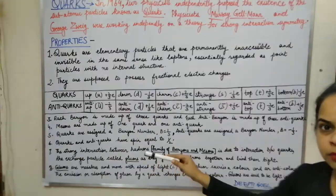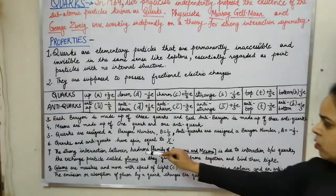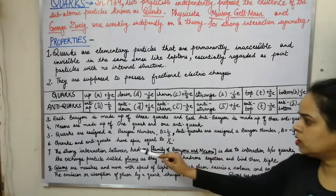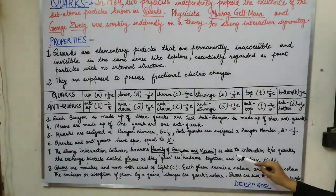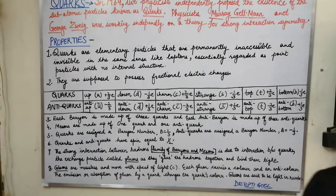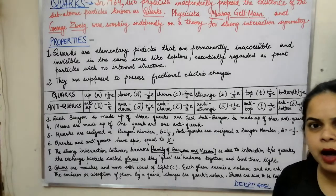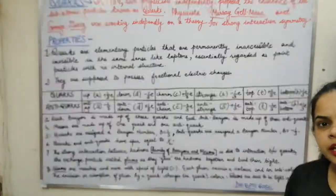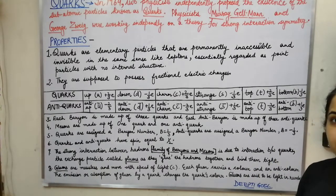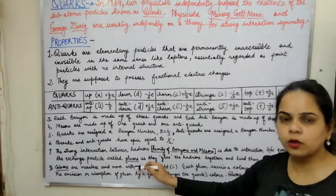There is a strong interaction between the hadrons, where hadrons is a family of baryons and mesons. The strong interaction between the hadrons is due to the interaction of these quarks, and every interaction has an exchange particle between them that holds the particles together. The exchange particles responsible for these hadrons to be tightly bound together are known as the gluons.